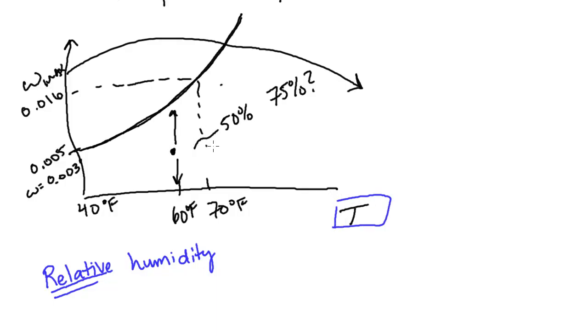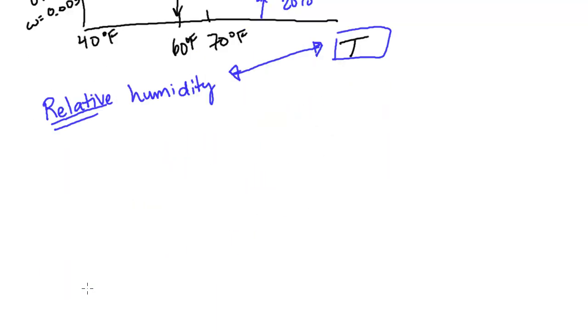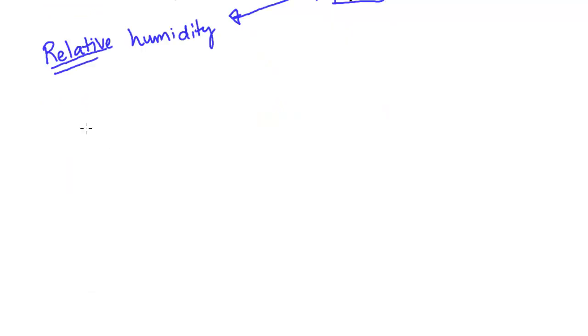That percentage of how close I am to this maximum level that I can get to will change. So for instance, I went from 60, I'm at the same level, say this was 50%, now I am only 20% of the way there. And so the relative humidity changes when temperature changes. And so that's what makes it relative. But it's still a very useful thing to gauge about our state of the air in HVAC.